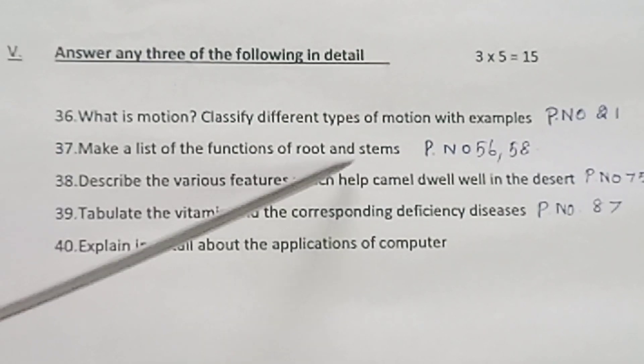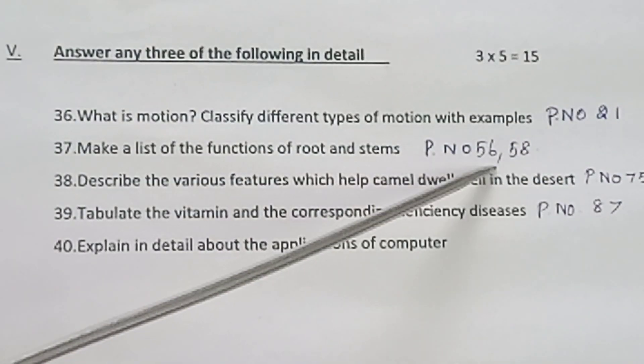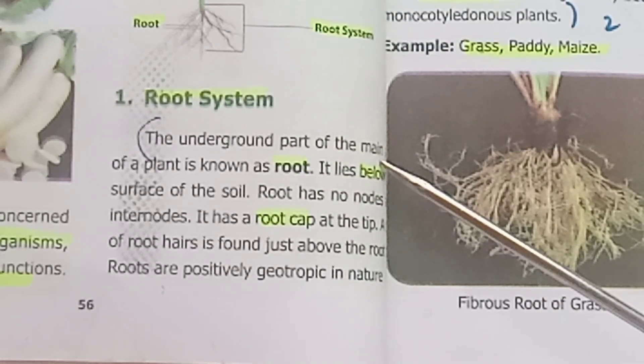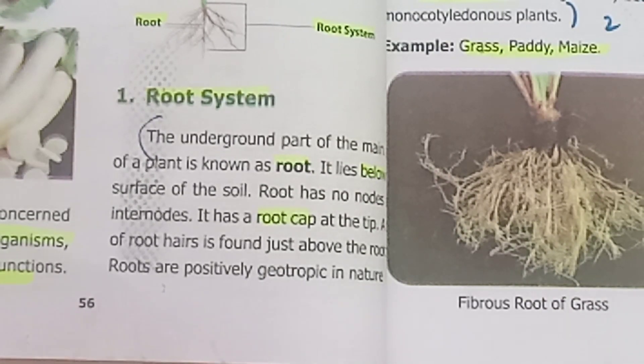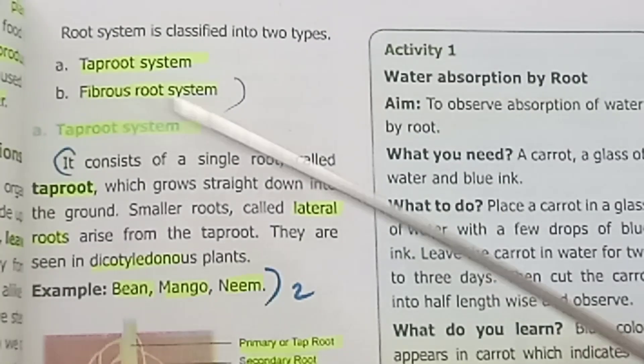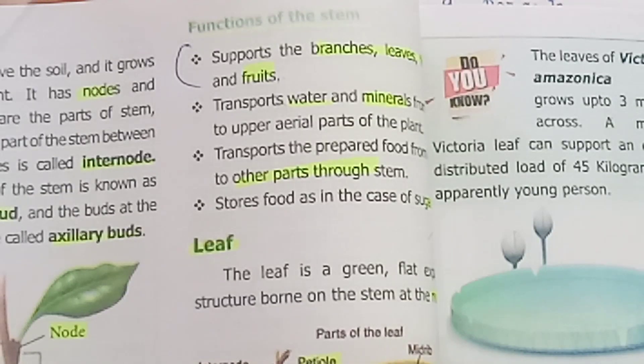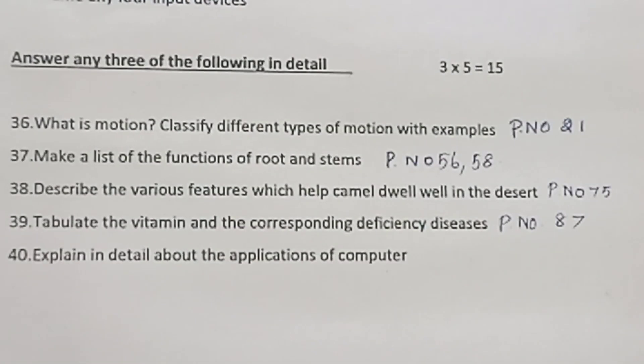Question 37. Make a list of the functions of root and stem. Page number 56, 58. The underground part of the plant up to fibrous root system. Then page number 58, functions of the stem, the four points.